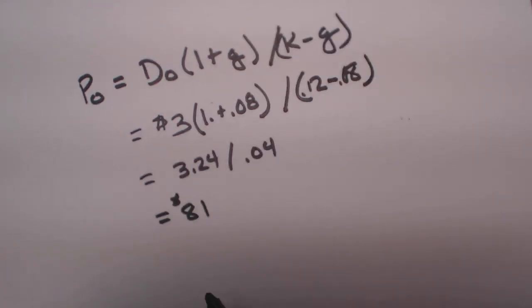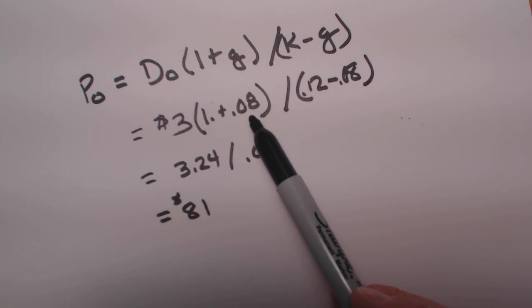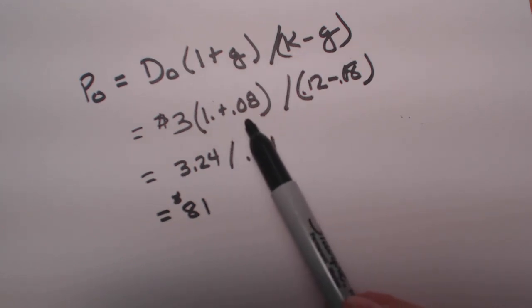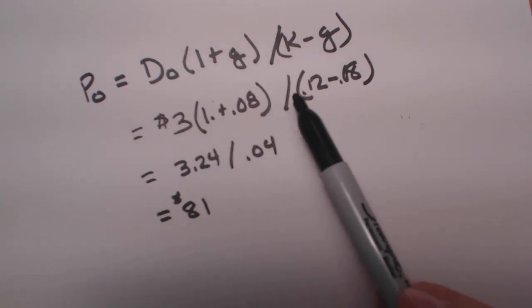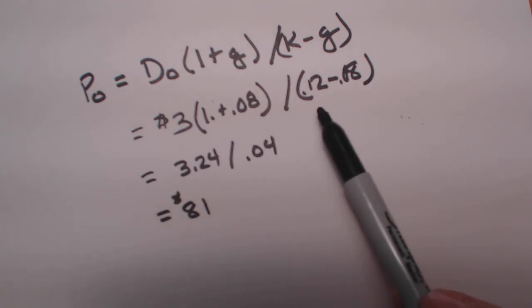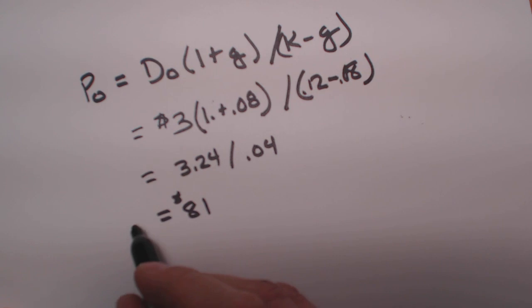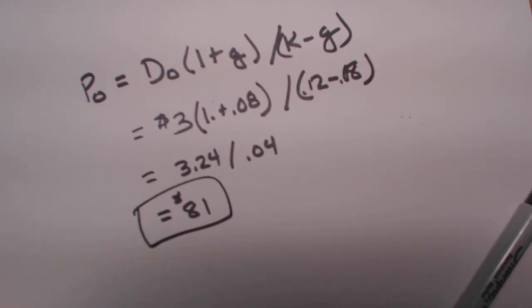So based upon the Gordon model for this company, Tolland, if you receive a $3 dividend with an 8% increase and expect a 12% return on your investments each year, what would you be willing at most to pay for the stock? The answer, after you do the Gordon model calculation, is $81. Thank you, and that is your answer.